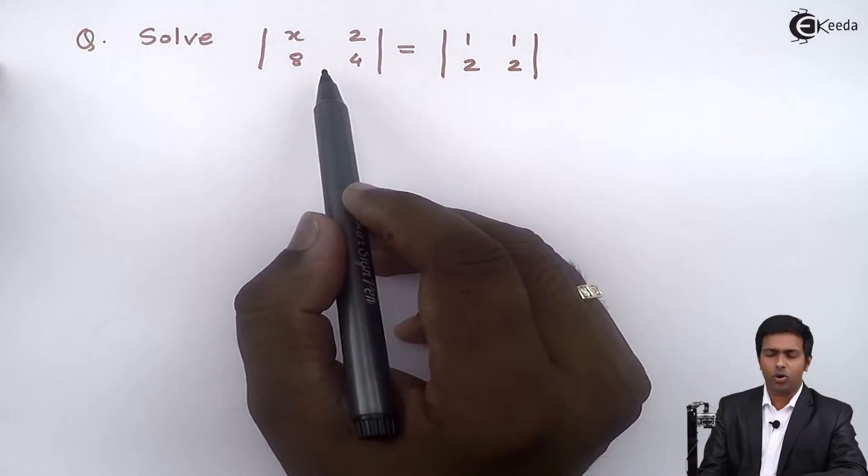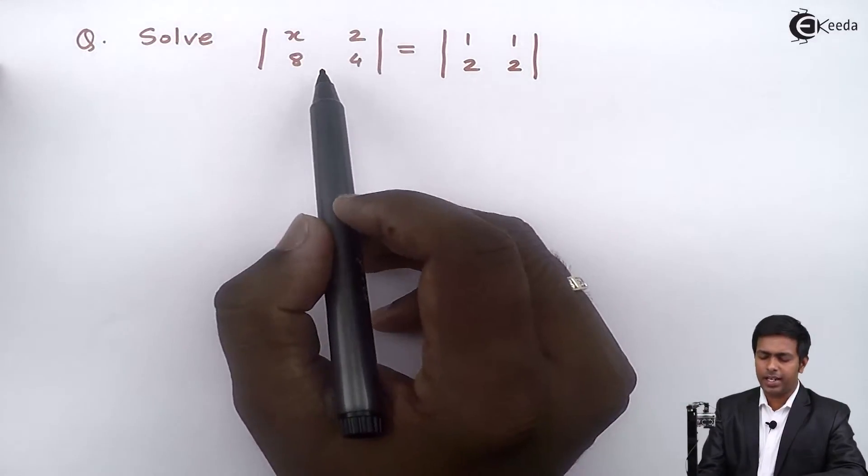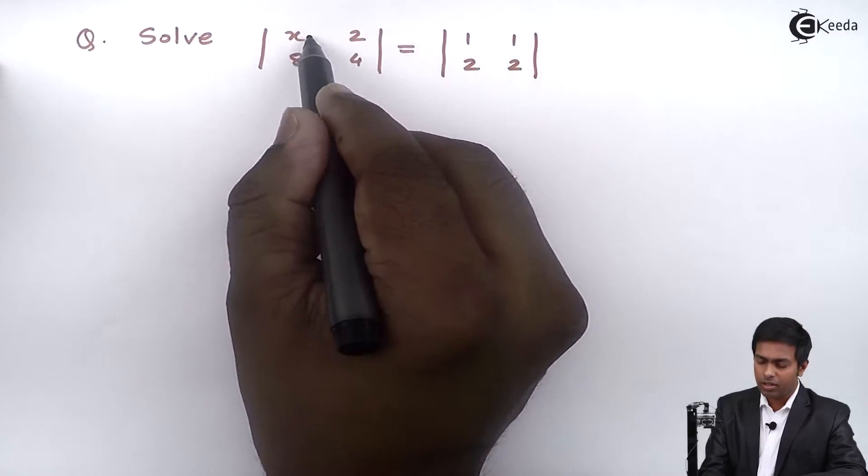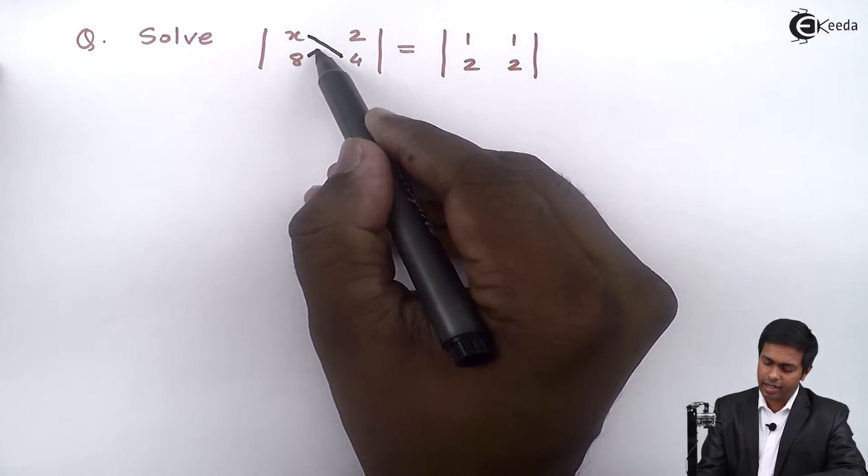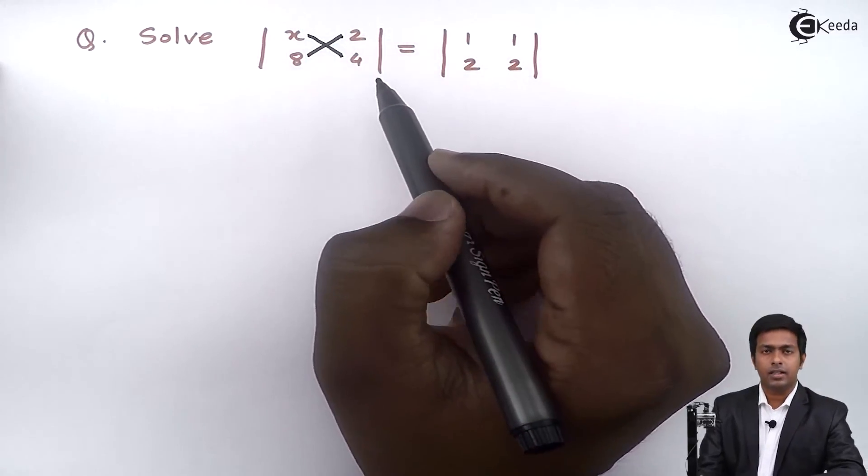To solve the 2 by 2 order determinant, we multiply the elements on the principal diagonal. At the same time we multiply the elements which are on the secondary diagonal and we subtract the values.